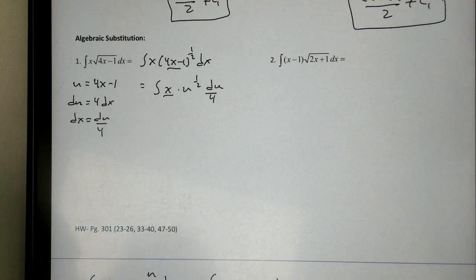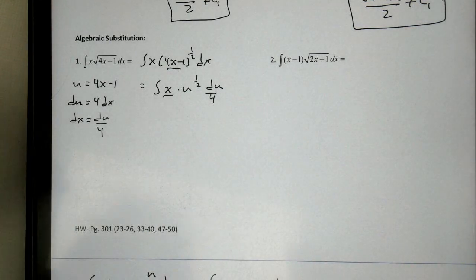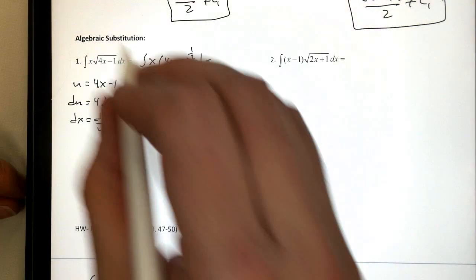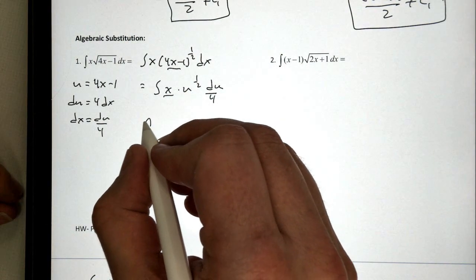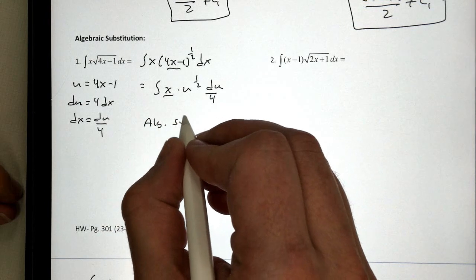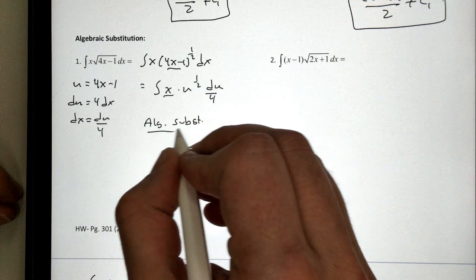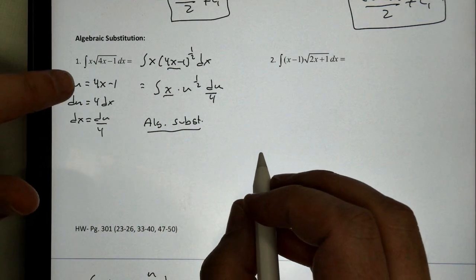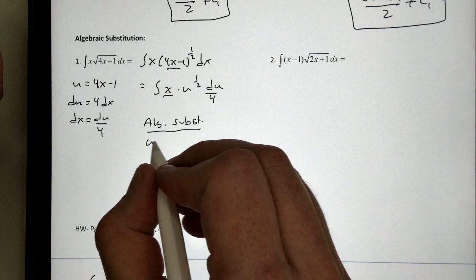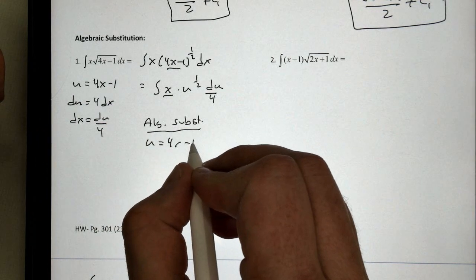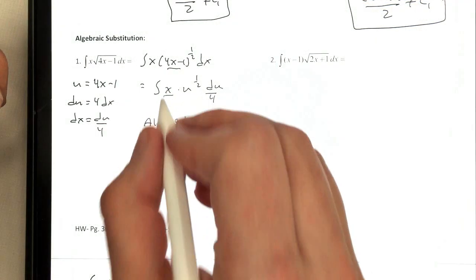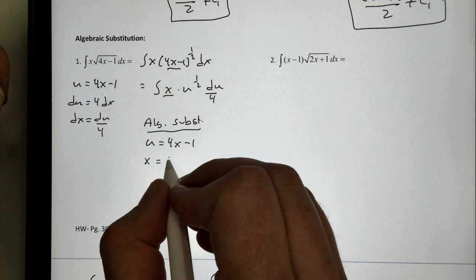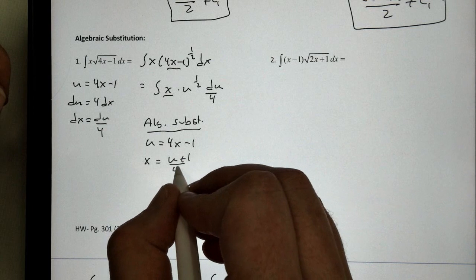So, we can panic. Or two, we can just use what's called an algebraic substitution. And that's what we're going to do here. We're going to do what's called an algebraic substitution. And what I mean by that is, notice, I know u is equal to 4x minus 1. I can replace my x if I solve for it. x is going to be u plus 1 over 4.